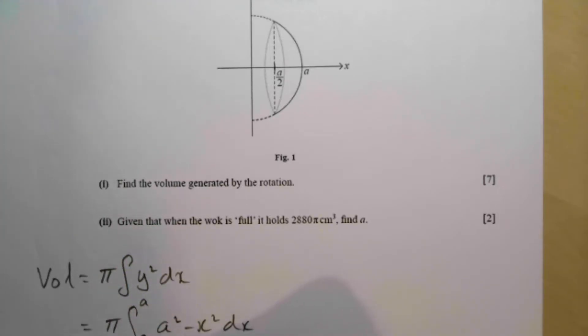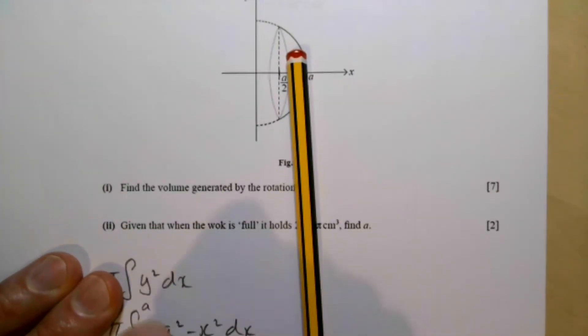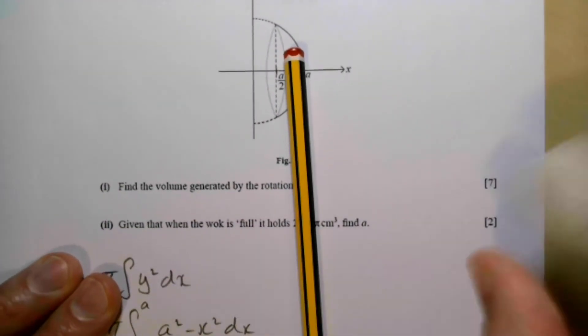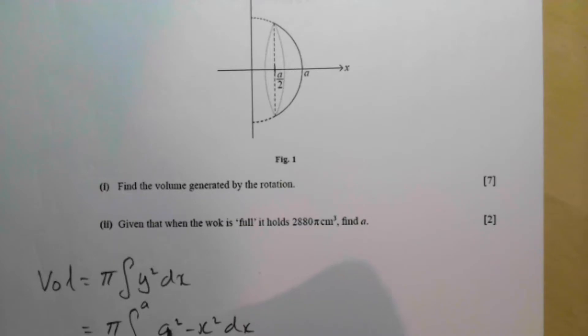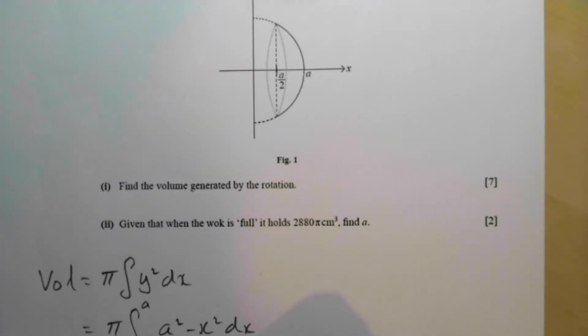So it's going to be pi, ready to integrate. So what I say is a number on the integrated, you're going to get that times x. So here we get a squared x. And then here, add 1 to the power divided by the new power. So it's a third x cubed.